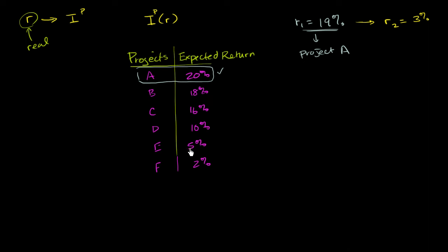If you have the money, you would rather put that money and get 5% than lend it out and only get 3%. So you'll even do project E. If you need to borrow it, it still makes sense. Borrow money at 3%, invest it at 5%, and you're making some real return.